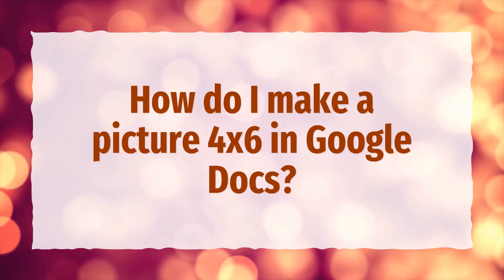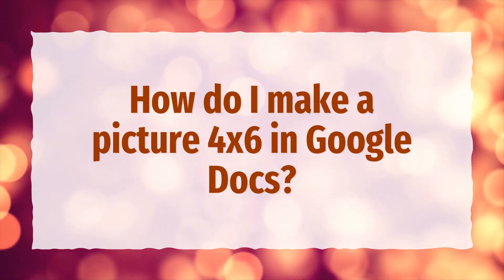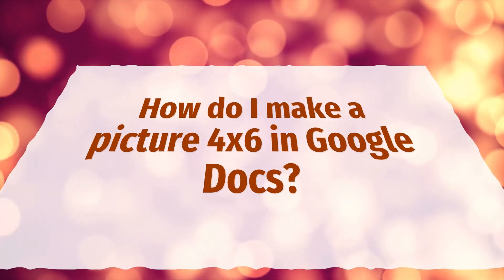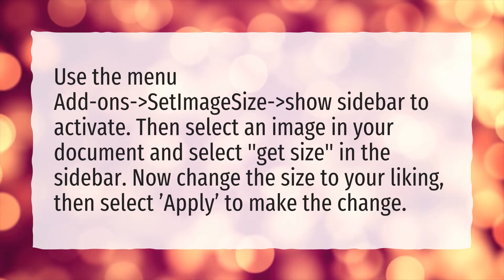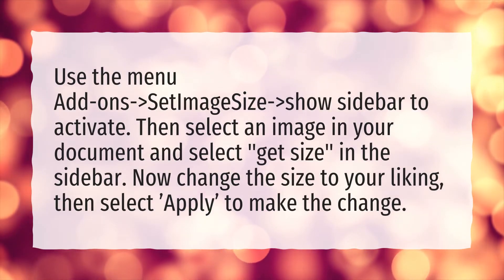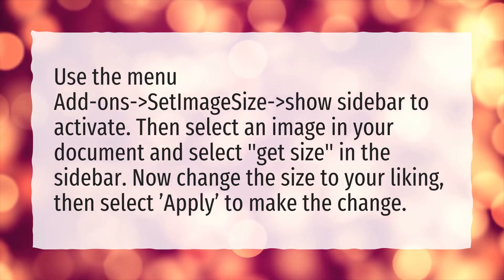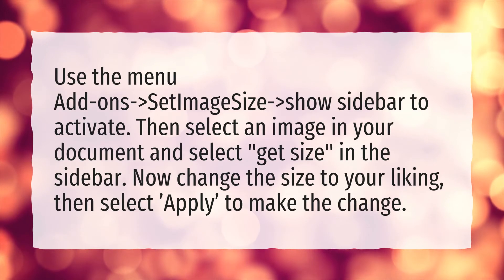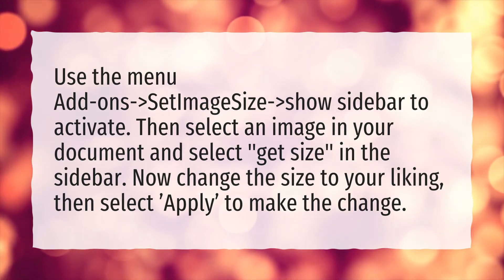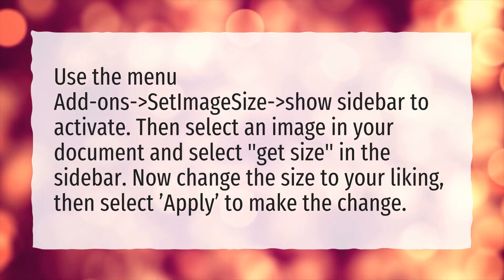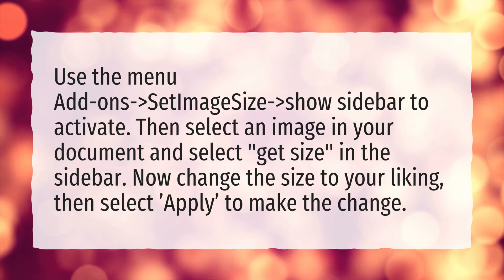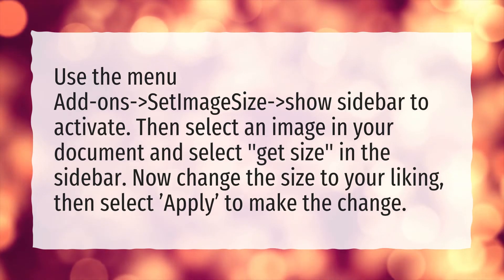How do I make a picture 4x6 in Google Docs? Use the menu Add-ons to set image size, then show the sidebar to activate. Select an image in your document and select Get Size in the sidebar. Now change the size to your liking.